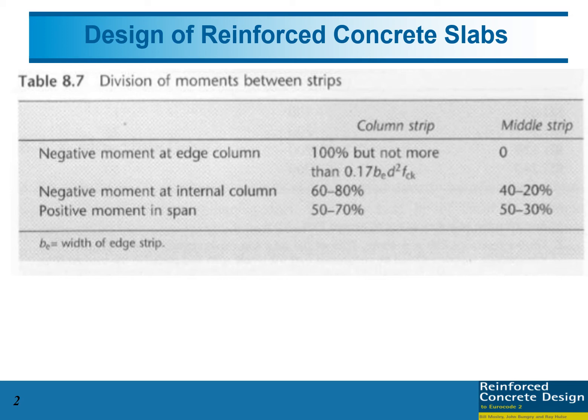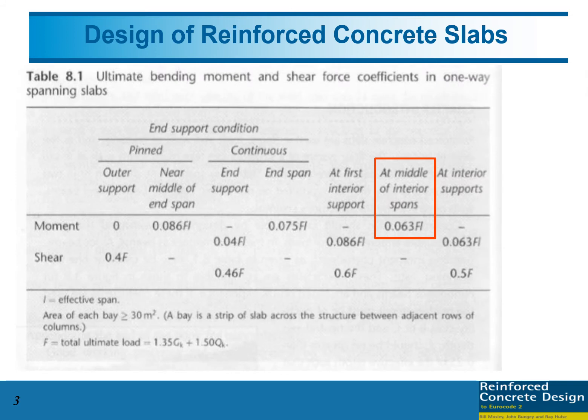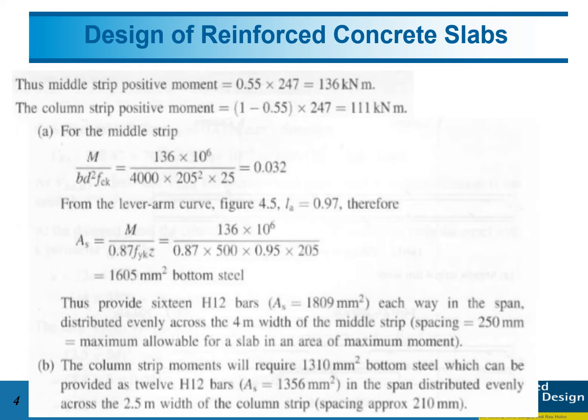In Table 8.1, you can see how to get the moment at the middle interior span of 0.063FL. From this slide, you can see the middle strip positive moment is 0.55 multiplied by 247, so we have 136 kN·m. This is for the middle strip.